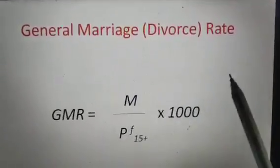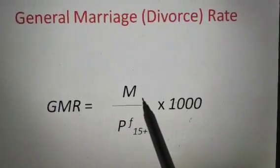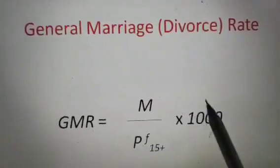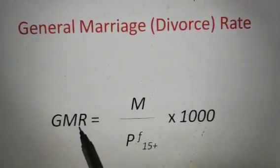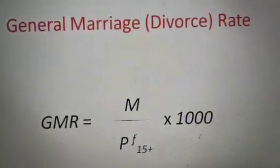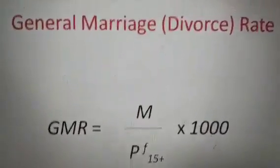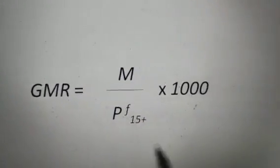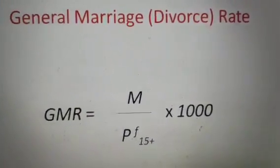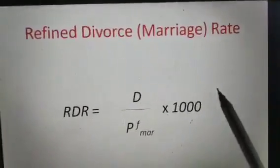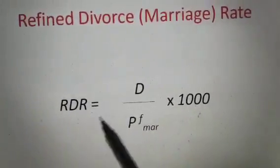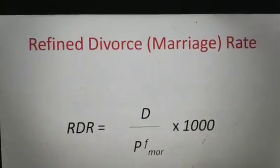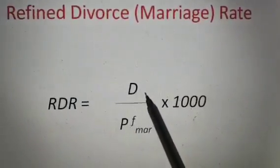Then comes the General Marriage Rate or General Divorce Rate. In the General Marriage Rate, M is divided by the population specific to females aged 15 and above, multiplied by 1000. For divorce, GMR = M / P(F 15+) × 1000, and GDR = D / P(F 15+) × 1000. The population portion is defined as the female 15-plus population. Next is the Refined Divorce or Marriage Rate, which equals D (or M) divided by the total married female population, multiplied by 1000.